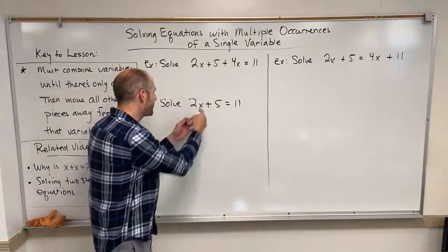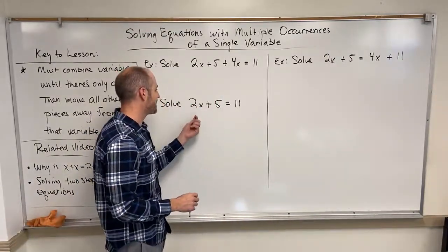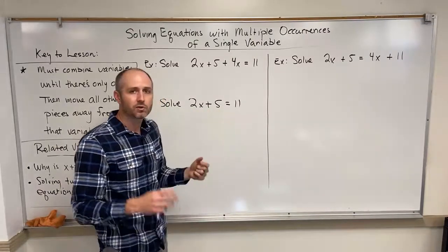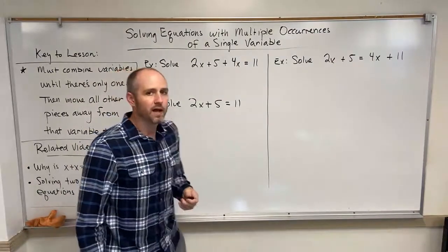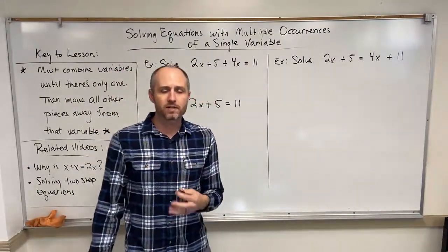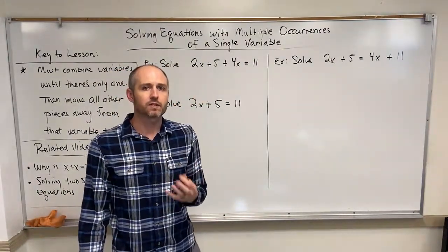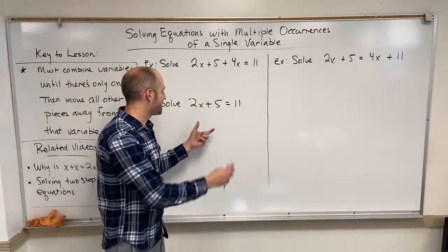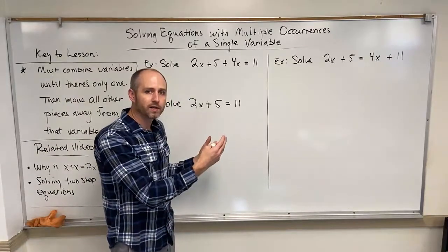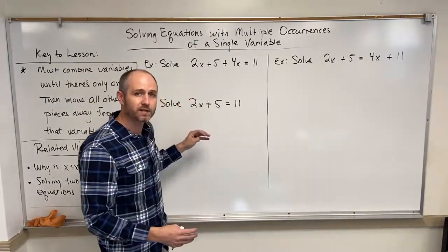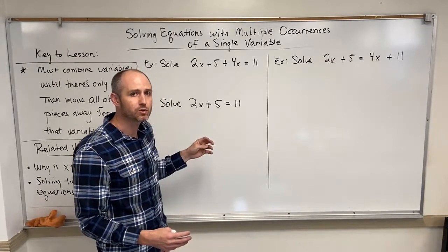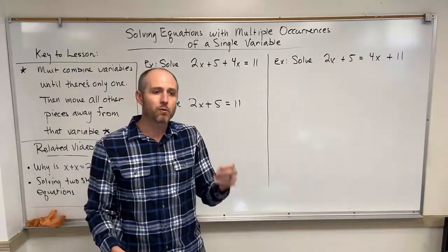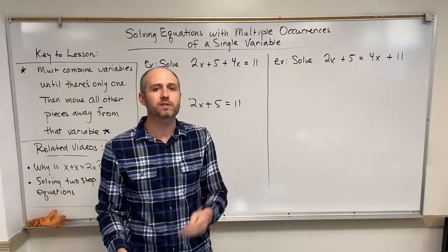And I'm not sure what it is. I guess it's 3. If x is 3, then we have 2 times 3 is 6, and 6 plus 5 equals 11. So 3 makes this statement true. Now, the method that we've been focusing on using for solving these equations is to isolate the variable.